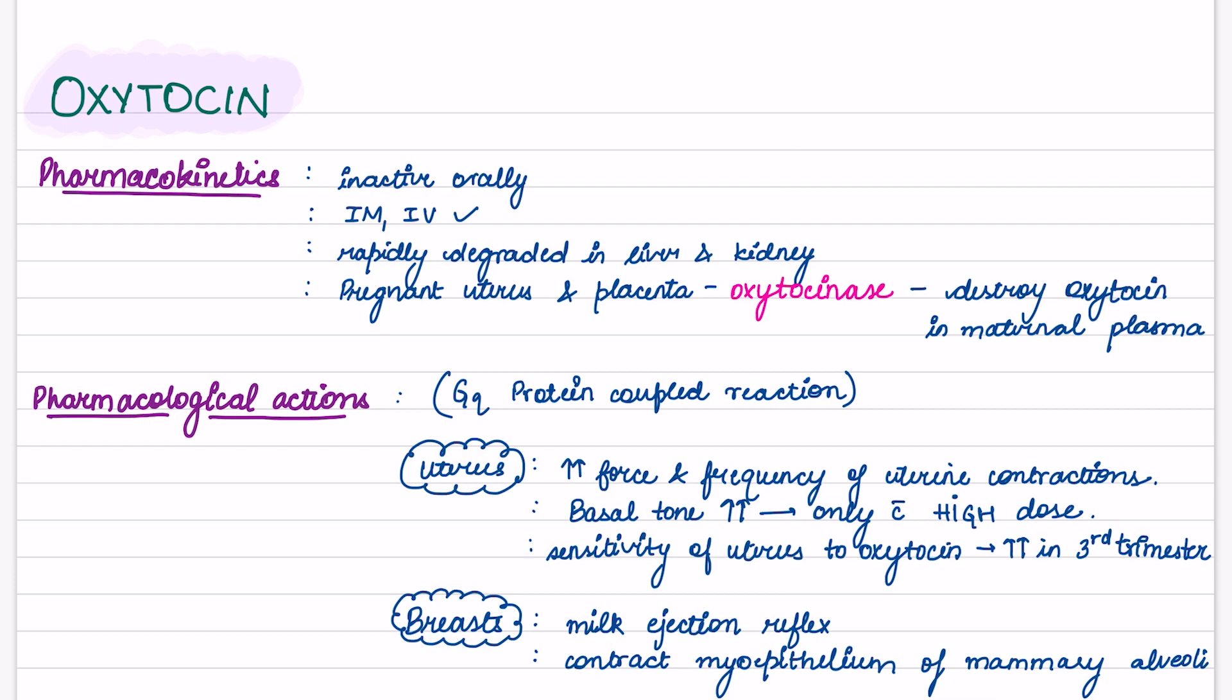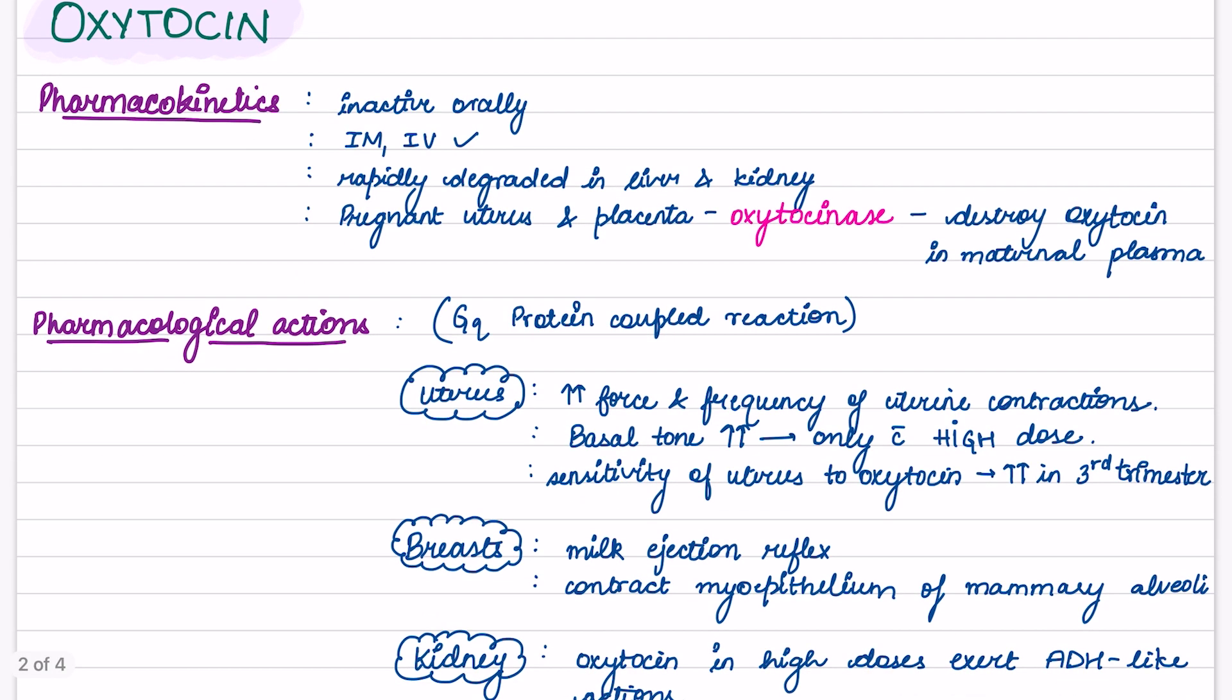Next, moving on to posterior pituitary hormones, that is oxytocin. Pharmacokinetics: it is inactive orally, so it is given intramuscularly or intravenously. It is rapidly degraded in liver and kidney. Pregnant uterus and placenta secrete an enzyme known as oxytocinase which destroys oxytocin in maternal plasma.